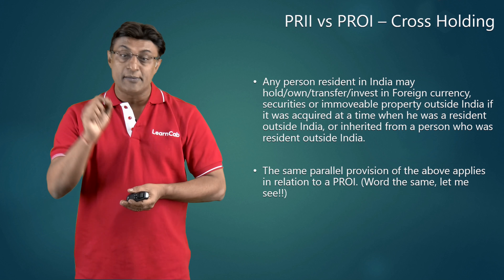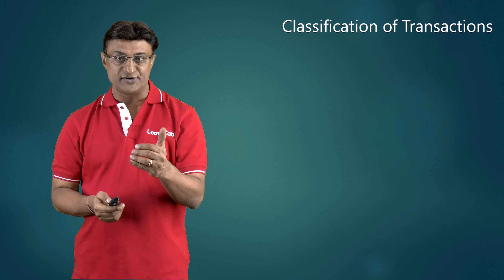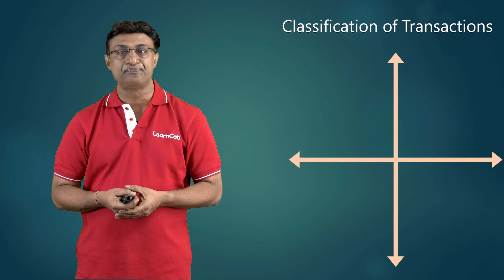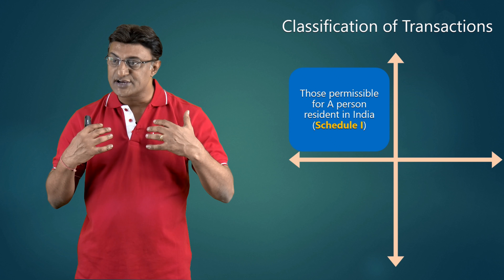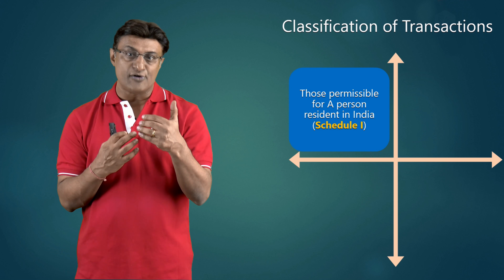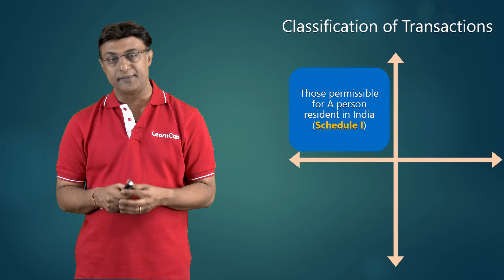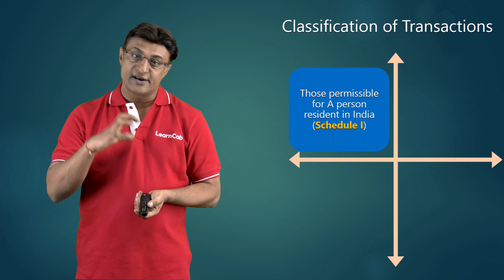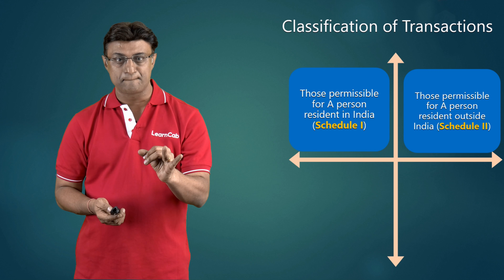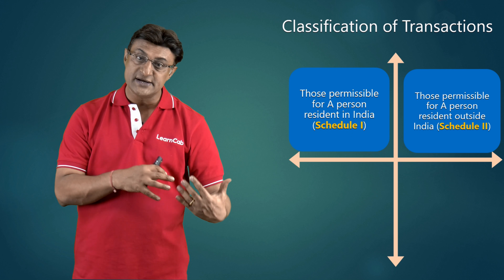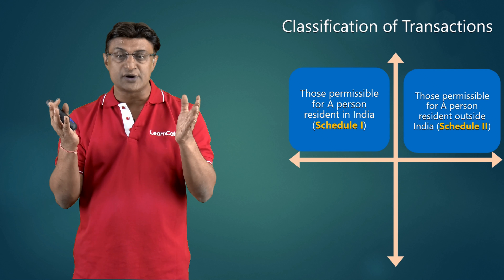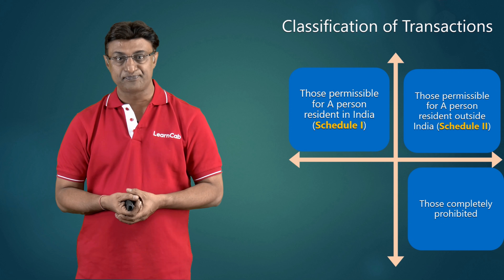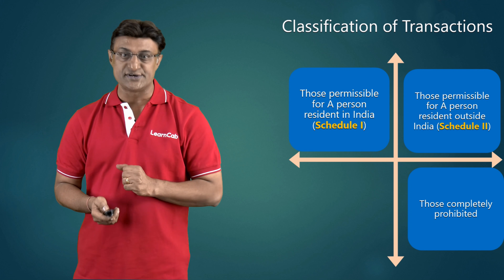The same parallel provision of FEMA applies in relation to a person resident outside India. How would you word it? Any person resident outside India may hold, own, transfer, or invest in Indian currency, securities, or immovable property in India if it was acquired at a time when he was a resident in India, or it has been inherited from a person who was resident in India. That is why we call it cross-holding — the property outside India of a person resident in India was inherited from a relative who is resident outside India, under a will, gift, inheritance, or succession.